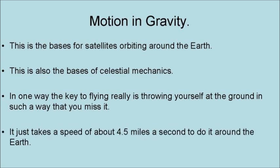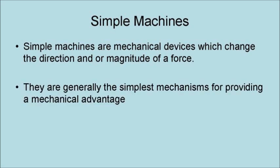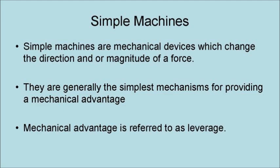Simple machines are mechanical devices which change the direction and or magnitude of a force. They are generally the simplest mechanisms for providing a mechanical advantage. A mechanical advantage is also referred to as leverage.